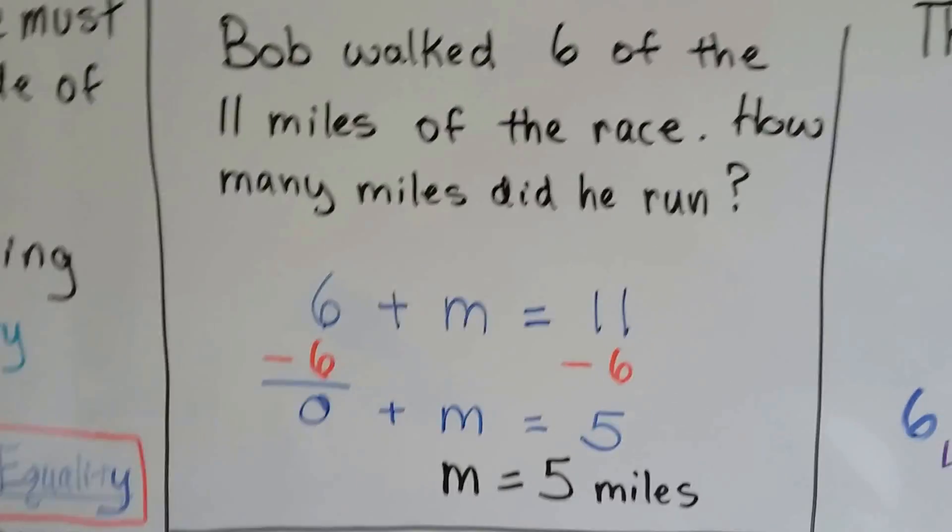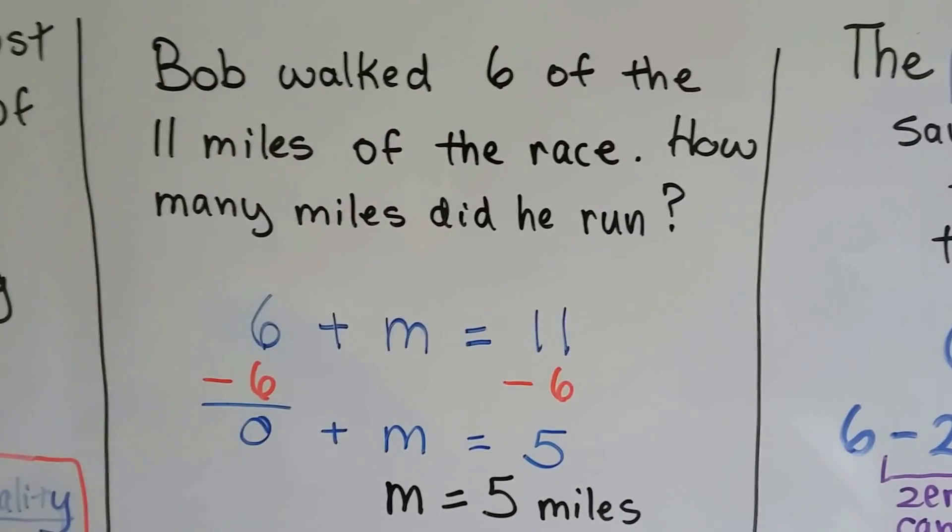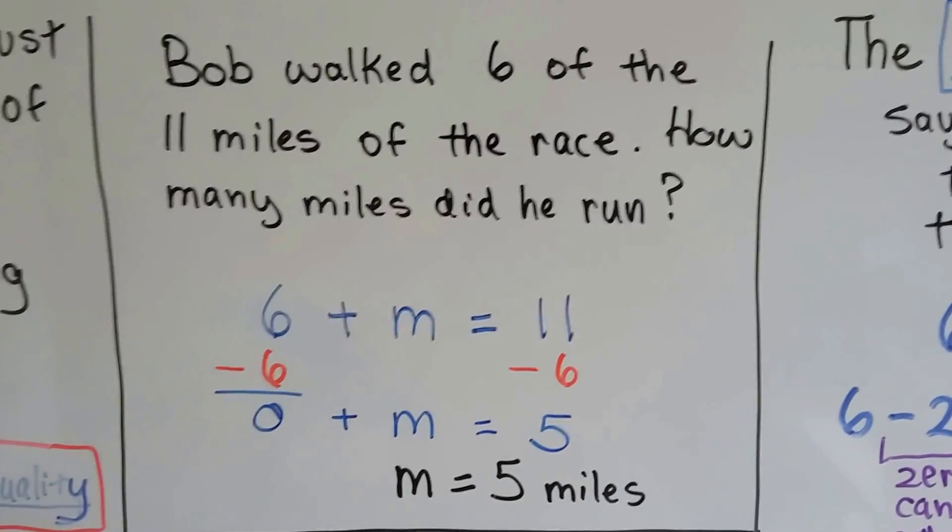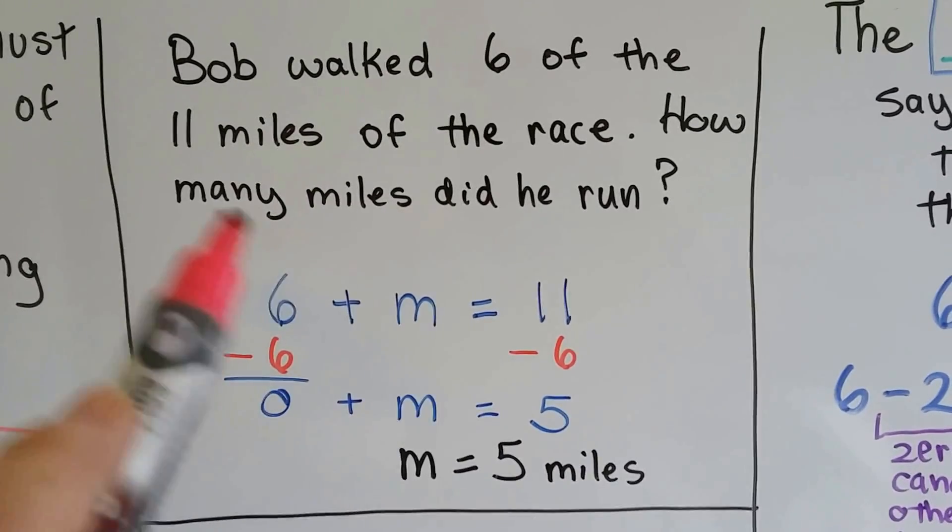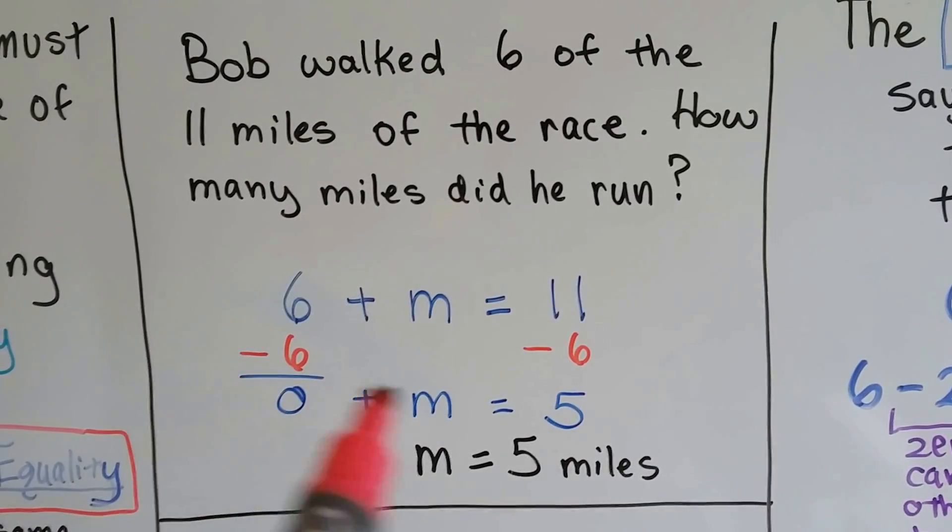So Bob walked 6 of the 11 miles of the race. How many miles did he run? Well, he walked 6 of them, so he ran 6 plus m equals 11. That's the miles. So what we do is we take away 6 from each side.